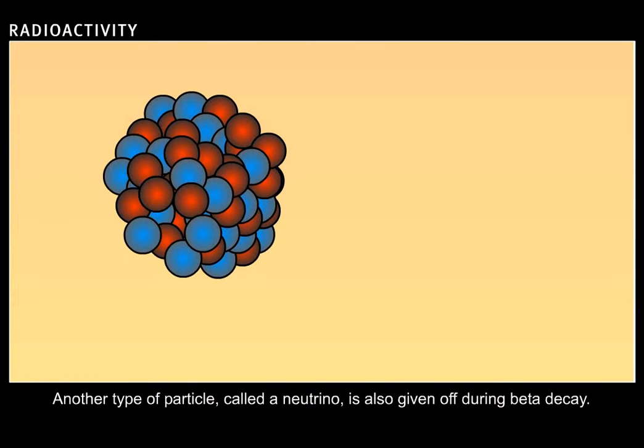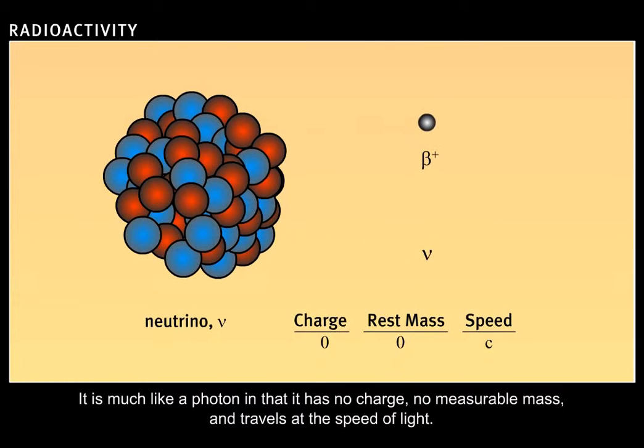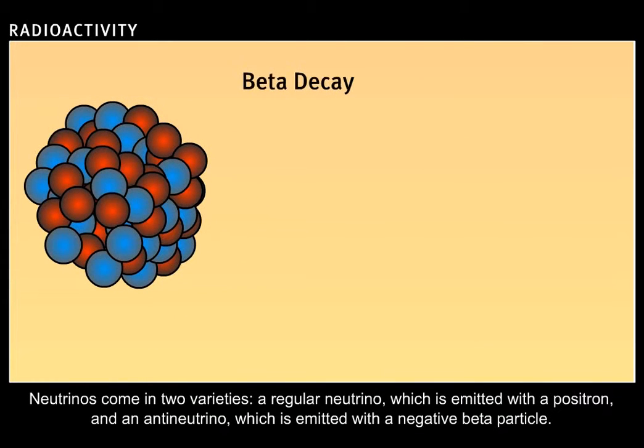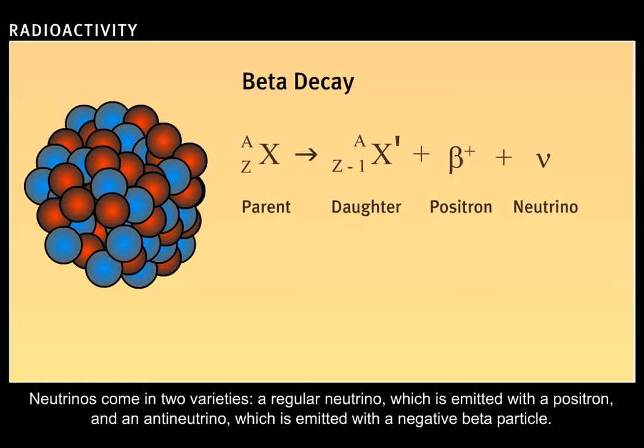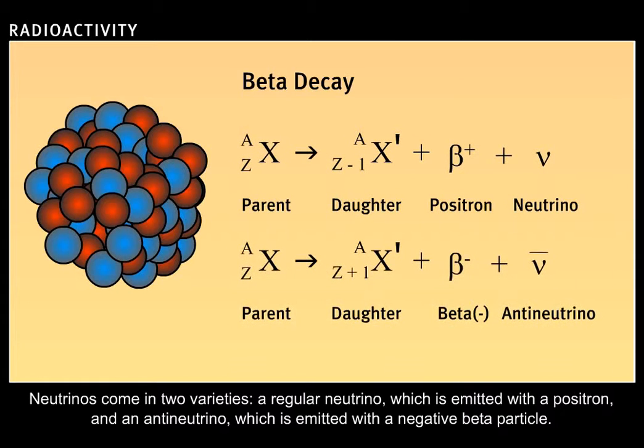Another type of particle, called a neutrino, is also given off during beta decay. It is much like a photon, in that it has no charge, no measurable mass, and travels at the speed of light. Neutrinos come in two varieties: a regular neutrino, which is emitted with a positron, and an antineutrino, which is emitted with a negative beta particle.